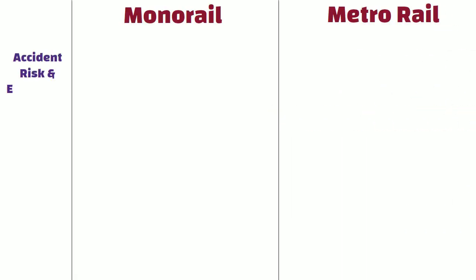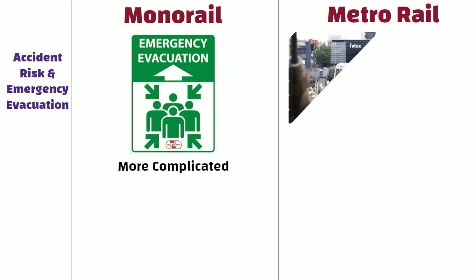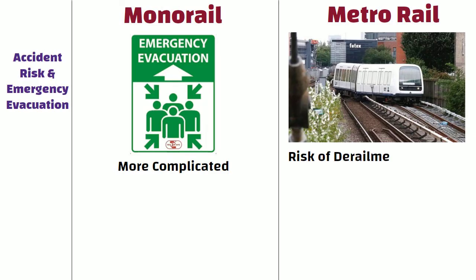Accident risk and emergency evacuation. Emergency evacuation in the case of a monorail system is more complicated due to system design features. Whereas the risk of derailment — i.e., wheels jumping the rails — is higher in the case of metrorail systems than monorail.